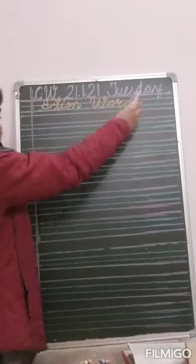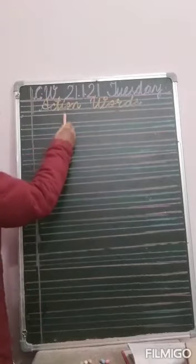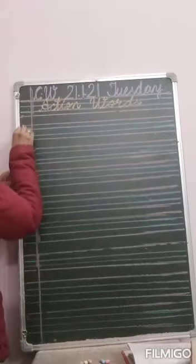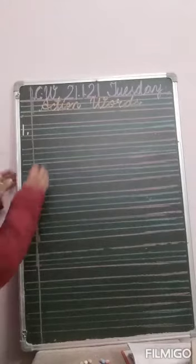Okay dear children. Now let's revise this topic in our notebooks. Take out your English notebooks and sharp pencils. First of all write down classwork, date and day, and then write the heading: Action Words. Now I will draw one action and you will tell me which action it is.